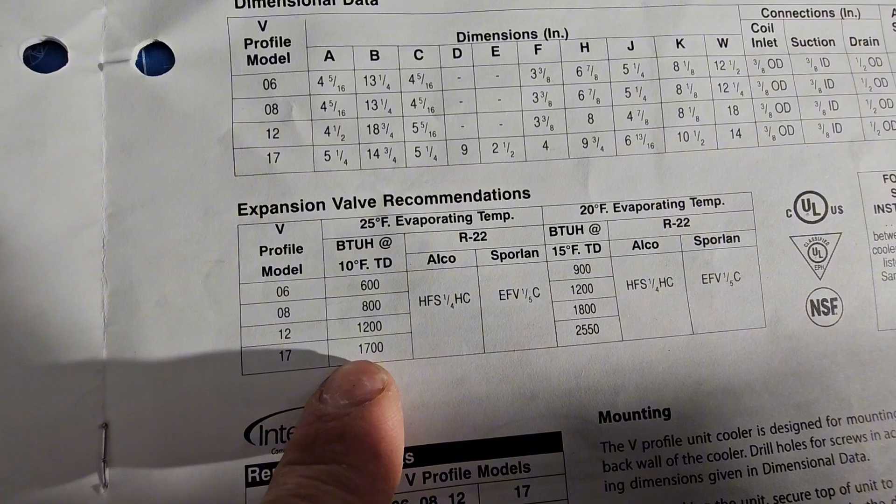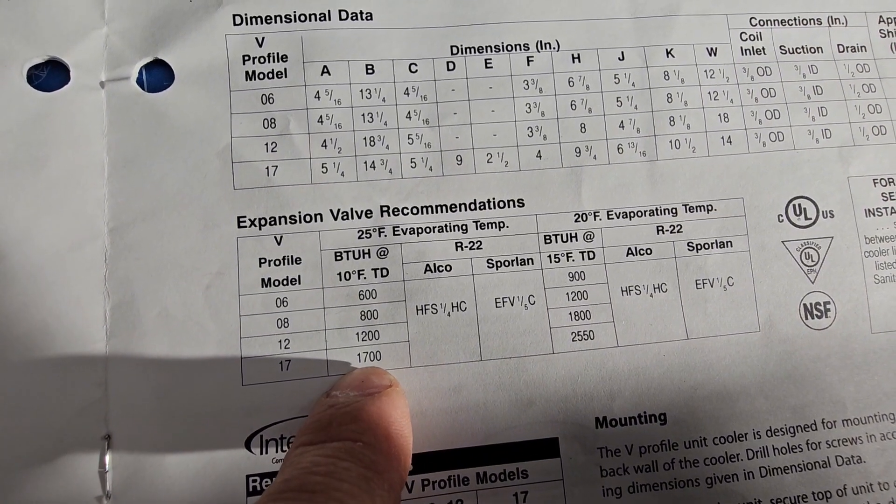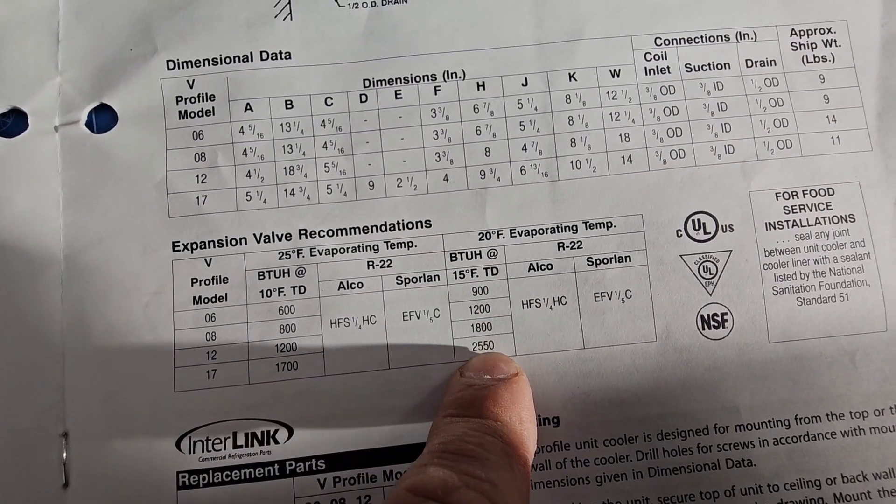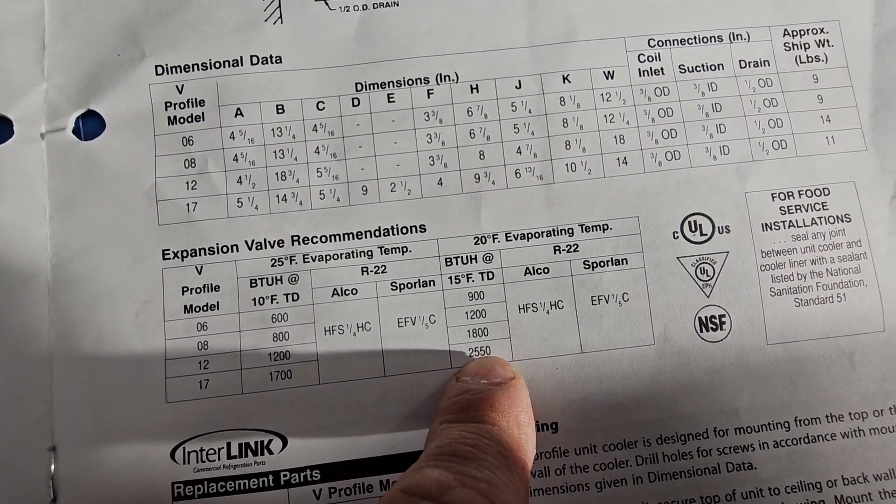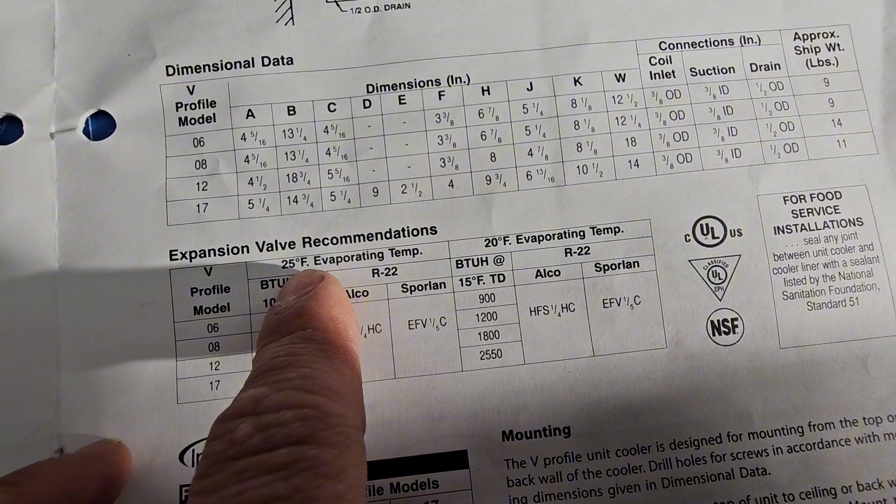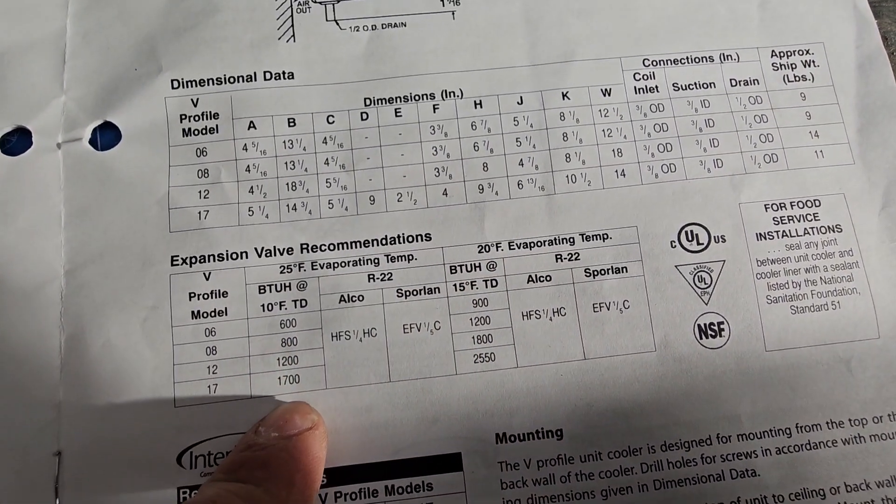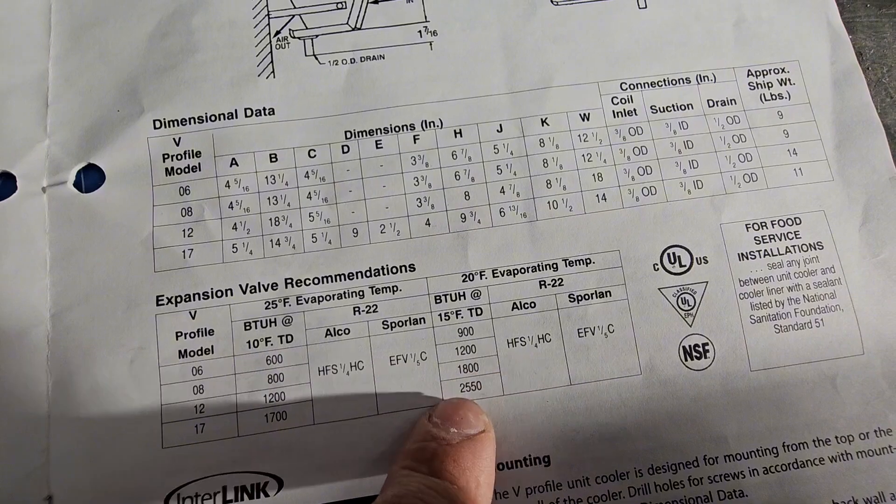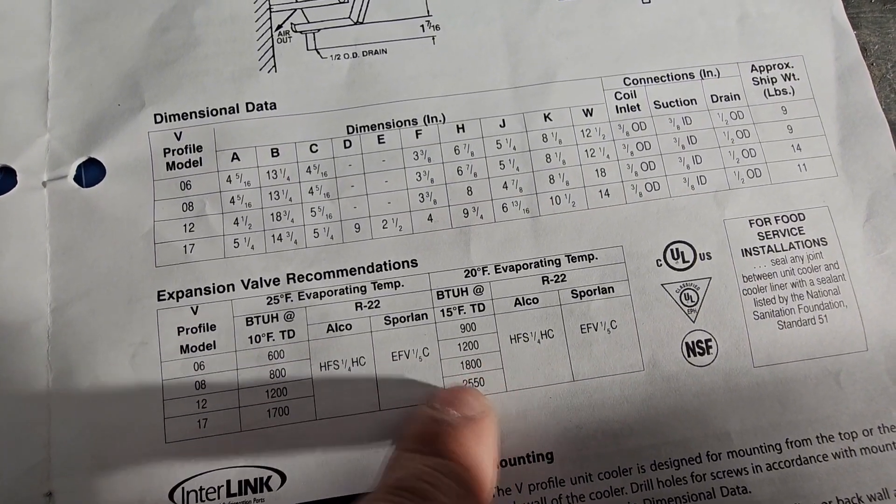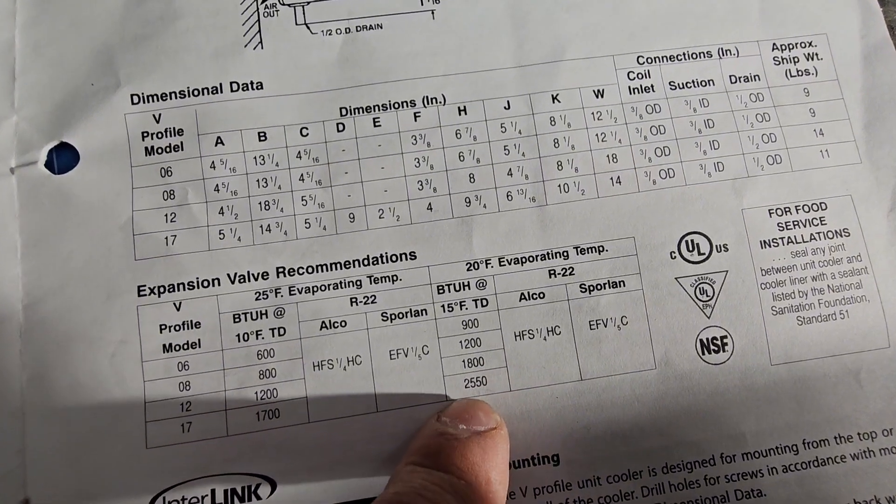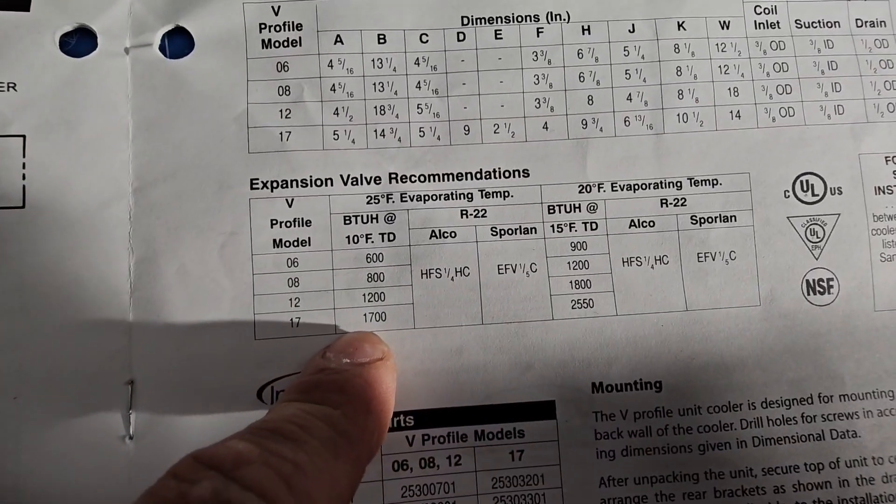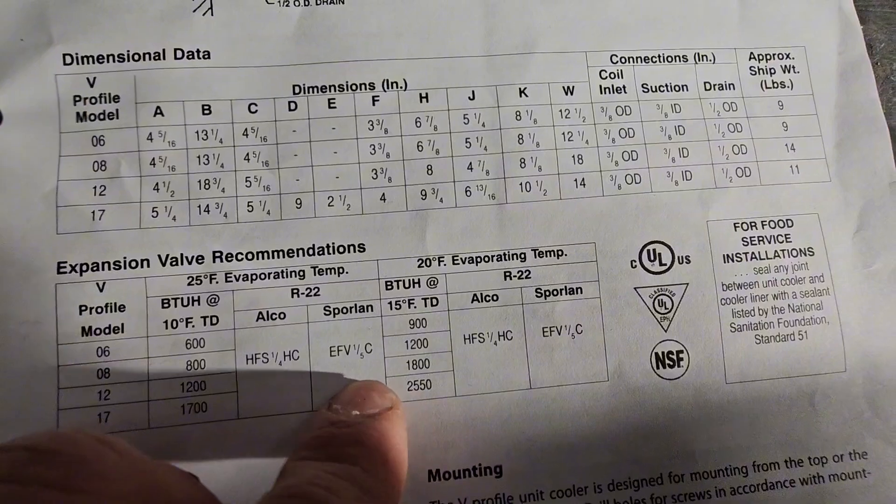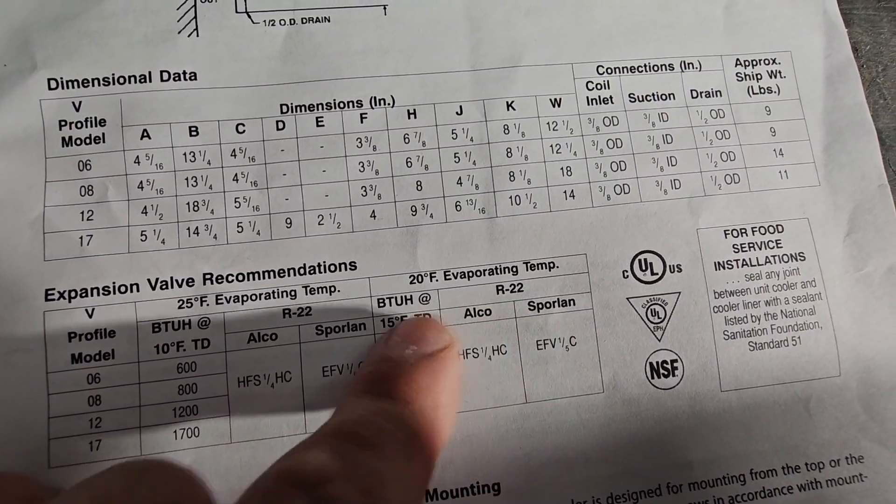And as you can see, at a 10 degree TD it gives you 1700 BTUs. At a 15 degree TD it gives you 2550 BTUs. Basically that's a 25 degree evaporator, that's a 20 degree evaporator. And basically what this means is what you have for a compressor. So if you have a strong compressor it's 2500, if you have a little bit of a weaker compressor you get 1700 BTUs out of this coil.